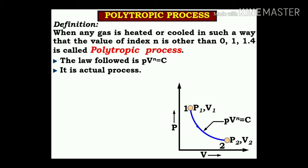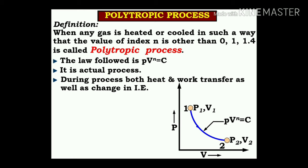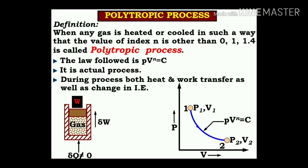The polytropic process is an actual process. During this process, both heat and work transfer occur as well as a change in internal energy. Heat is supplied to the system, work is done by the system, and the remaining energy is stored in the form of internal energy. Therefore, del Q is not equal to 0 — heat supply is part of the polytropic process.